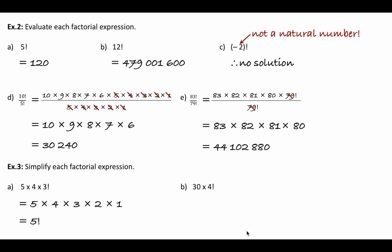Here's something a little different: 30 times 4 factorial. If we find some factors of 30 — that's 6 and 5 — then 6 times 5 times 4 factorial is nothing other than 6 factorial. So 4 factorial multiplied by 30 gives the same answer as 6 factorial. When simplifying, we don't want the numerical answer — we want a simpler, single factorial expression.